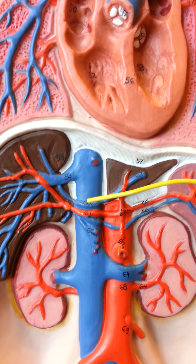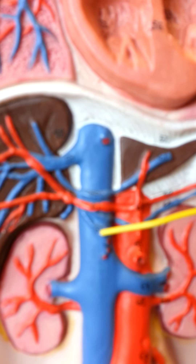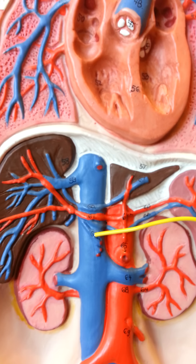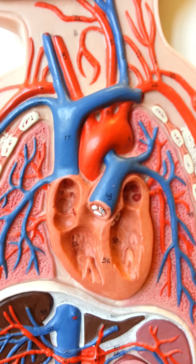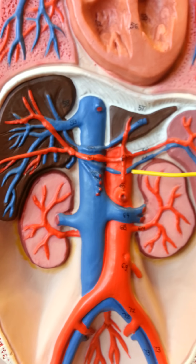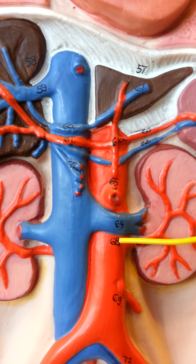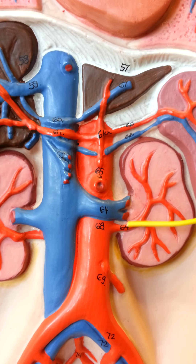The hepatic portal vein. The inferior vena cava, which is kind of behind there. The renal artery and then the renal vein.